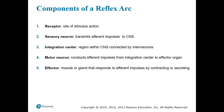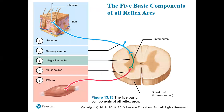The components of a reflex arc must have a receptor — something to receive the information — a sensory neuron that transmits afferent impulses to the CNS, an integration center within the central nervous system connected by an interneuron with a fast response, a motor neuron that will take the corresponding action back out, and an effector — the muscle or gland that's going to be responding.